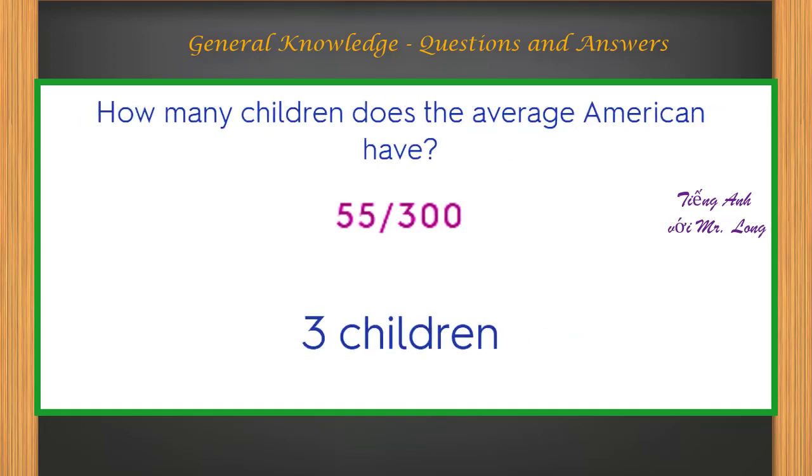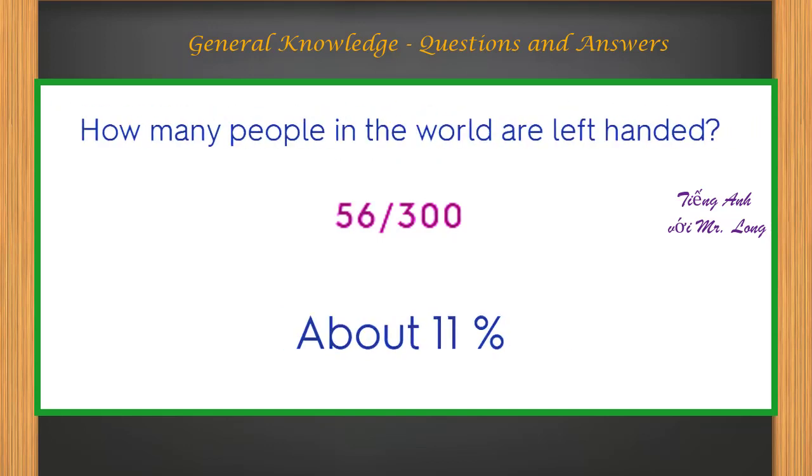How many children does the average American have? Three children. How many people in the world are left-handed? About eleven percent.